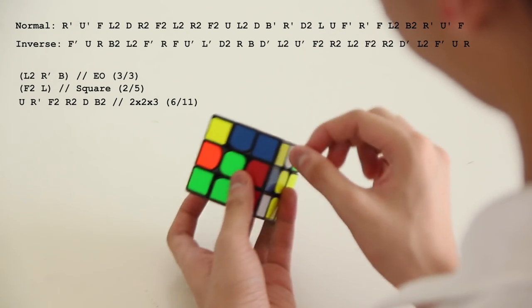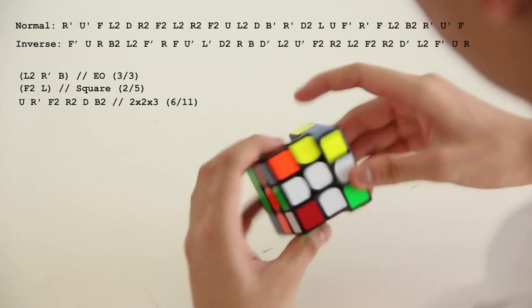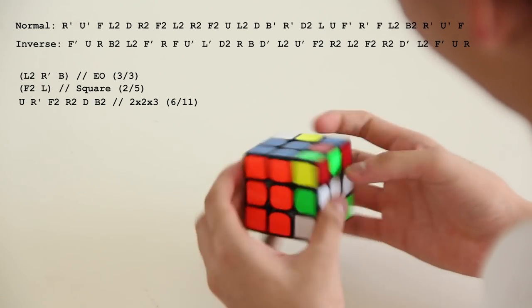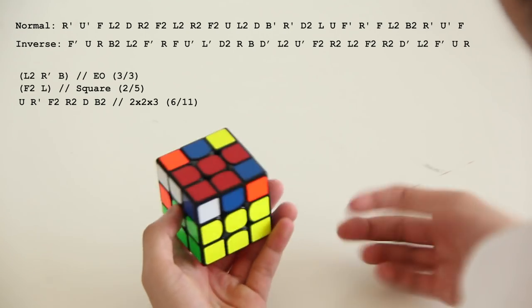And this is actually just a one move to a 2 by 2 by 2, but instead, using this pair I can connect it to here by doing an R2 to make another square, D to make a 2 by 2 by 2, and then B2 to finish the 2 by 2 by 3. And that's 11 moves in total.